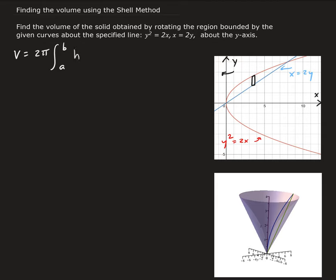We need to know the height of the represented piece and the radius for the volume. The radius is the distance between where the represented piece is and the axis of revolution, and that's going to be just x.